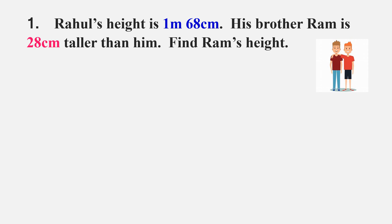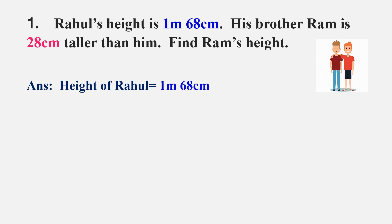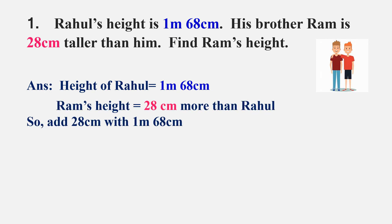We will start writing the steps. Height of Rahul is equal to 1 meter 68 centimeters. We have to find Ram's height. In the question it is given Ram is 28 centimeters taller than him, so we have to add 28 centimeters with 1 meter 68 centimeters. For that we have to write meters and centimeters separately.